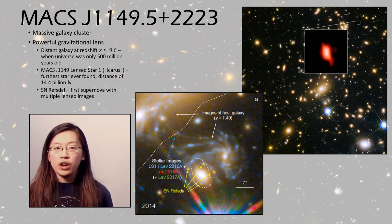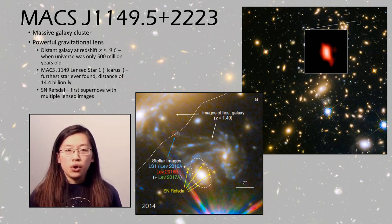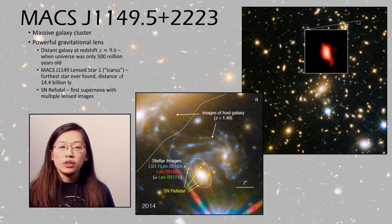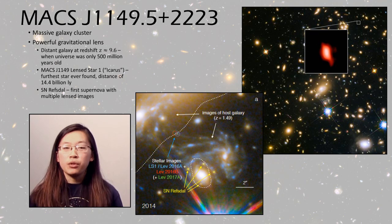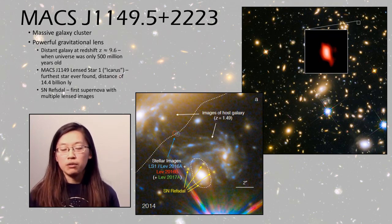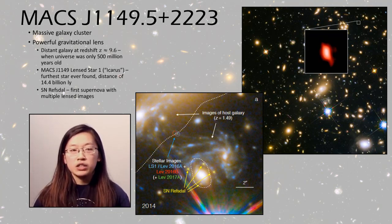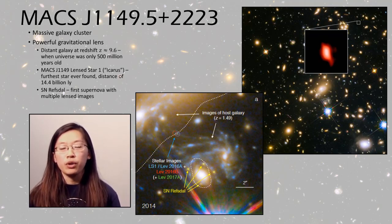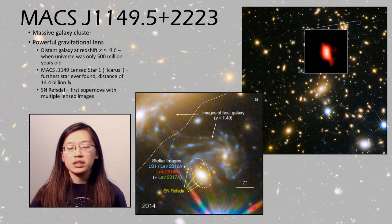Another cluster is MACS J1149, mostly known as a very powerful gravitational lens. Among the things it has lensed is a very distant galaxy at redshift 9.6, meaning the universe was only 500 million years old when that light was emitted. It also lensed the furthest star ever found — MACS J1149 Lensed Star 1, or the better name Icarus — a single star visible at a distance of 14.4 billion light years. In addition, it lensed Supernova Refsdal, the first supernova with multiple lensed images. Scientists were actually able to predict when the next image would appear based on the mass distribution they had determined for the cluster.